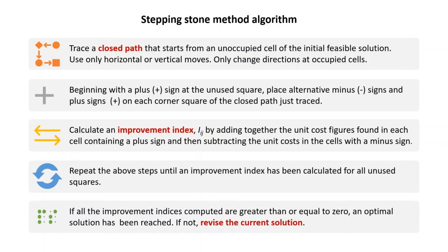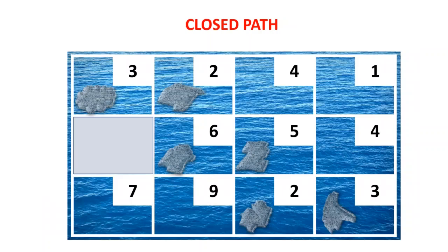Otherwise, if there is one improvement index that is negative, it means your solution is not optimal. You can then improve the solution, as we will see in the next slide.